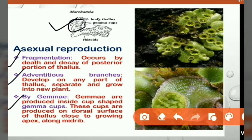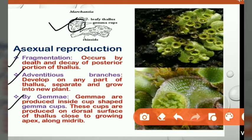Fragmentation is a process in which the posterior part of the plant will break into a new thallus after death and decay of the plant. Adventitious branches are structures which develop on any part of the thallus, separate, and then grow into a new plant.